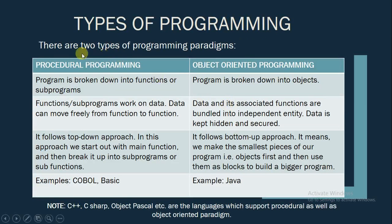Now there are two types of programming paradigms: procedural programming and object oriented programming. Let us now understand the difference between the two. In procedural programming, the program is broken down into functions or subprograms, while in object oriented programming, the program is broken down into objects.